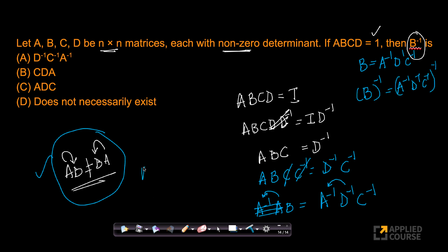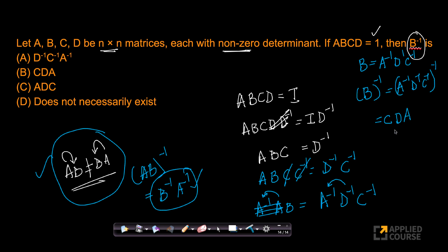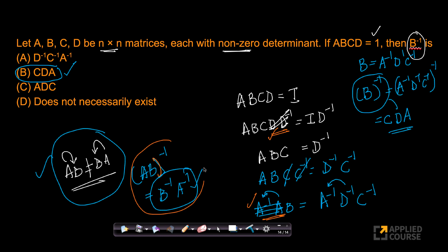Now B inverse is the inverse of A inverse D inverse C inverse. Using the property that (AB) inverse equals B inverse A inverse, the inverse of A inverse D inverse C inverse is C times D times A. So B inverse equals C, D, A — which is option B. The key properties needed here are that AB inverse equals B inverse A inverse, and that matrix multiplication is not commutative.